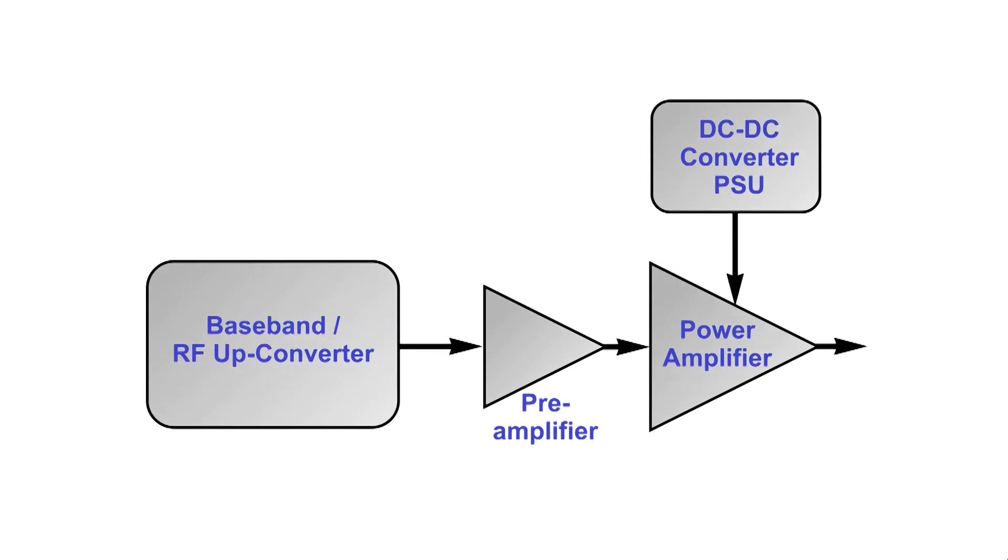Let's look at the block diagram of a typical transmitter system. Here we see the RF generator feeding a pre-amplifier, which then drives the final amplifier. In turn, the RF amplifier obtains its power from a fixed voltage supply, which these days is usually a switch mode power supply to ensure the best efficiency.